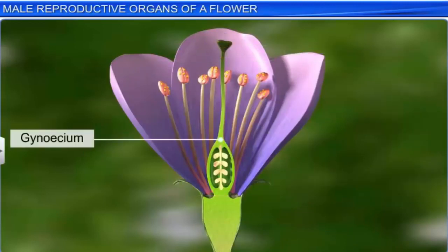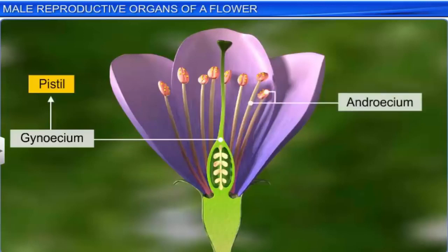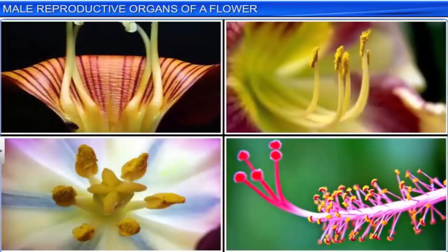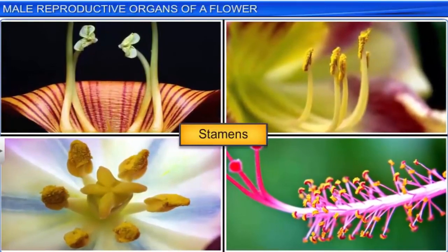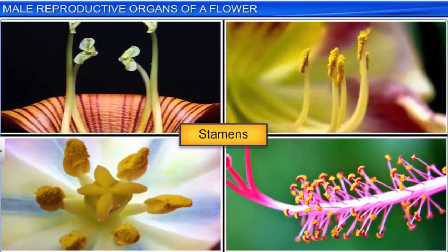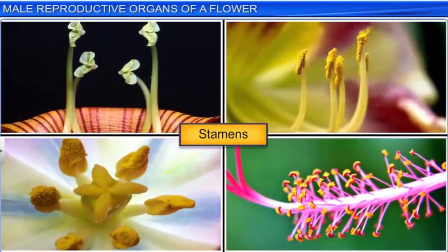The gynoecium, which consists of one or many carpels or pistils, represents the female reproductive part. Whereas the androecium, which consists of a whorl of stamens, is the male reproductive part of the flower. Though the number and size of stamens in an androecium differ across species of flowers, the basic structure remains the same.